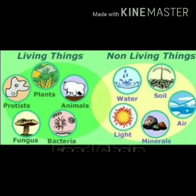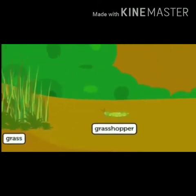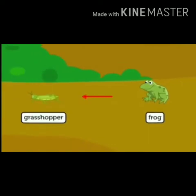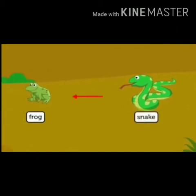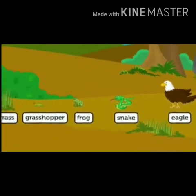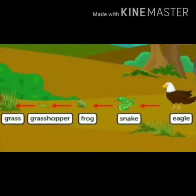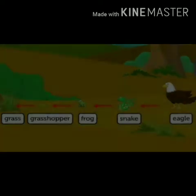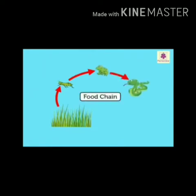So let us see that by what — food chain. Now what is a food chain? Grasshopper eats grass. Frog eats grasshopper. Snake eats frog. And finally eagle eats snake. So they are food for the next one. That is why we say that they form a chain — such a chain is called a food chain. Each of these components is a link in a food chain.